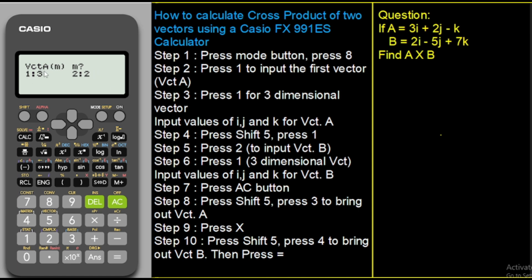Now the calculator is asking whether vector A is a three-dimensional or two-dimensional vector. Press 1 for a three-dimensional vector, press 2 for a two-dimensional vector. The vector we have here is a three-dimensional vector — we have I, J, and K, three components — so we are going to press 1 for three-dimensional vector.